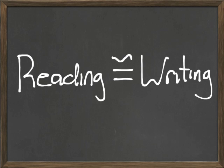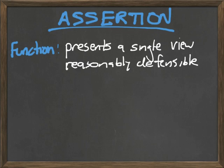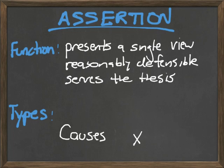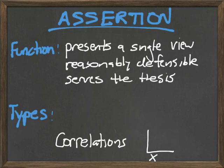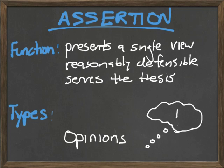Let's start with assertions. An assertion presents a single point of view that's reasonably defensible and ultimately serves the larger argument's thesis. There are many types of assertions: causes, where one argues that something results in something else; correlations, where one argues that if something happens to one thing, something else happens to another; and opinions — strong statements about how something is or how it works.